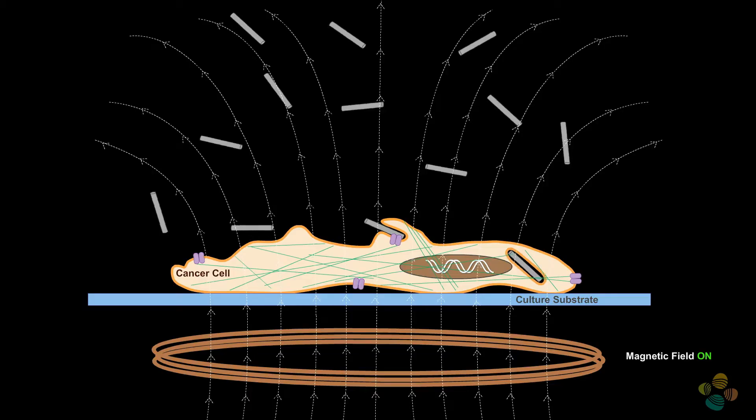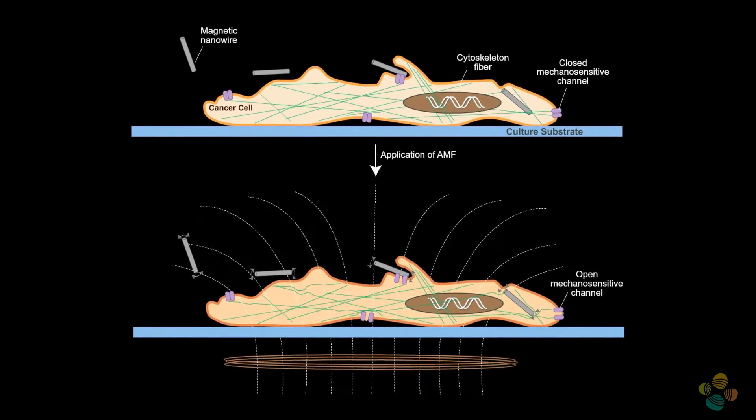The nanowires are exposed to a magnetic field that changes in direction all the time and as the nanowires behave like a compass needle they follow the magnetic field direction and that causes them to vibrate. If those nanowires are in contact with the cancer cell the vibration kills the cell.